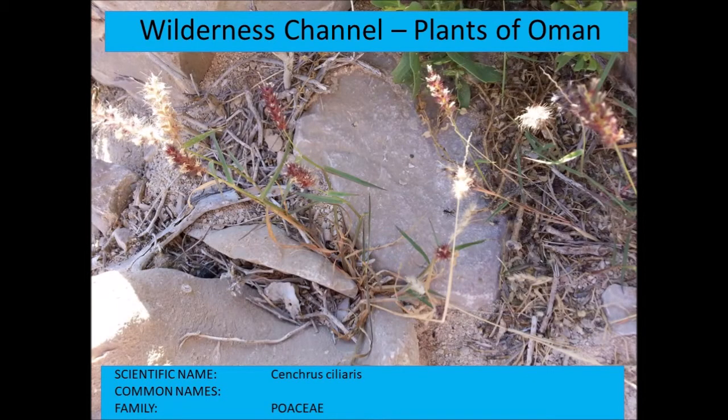Cenchrus ciliaris is one of the grass species typical in Oman. You'll actually find this species in many other parts of the world too.